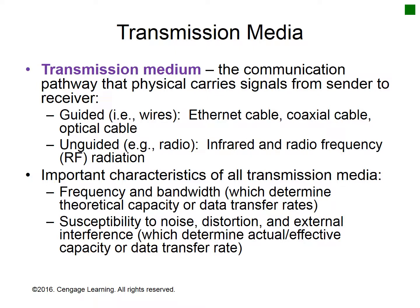Bandwidth is the difference between the highest and lowest frequencies that can be propagated through a transmission medium. Higher bandwidth channels can reliably carry composite signals with more data content over longer distances. The effective data transfer rate can be much lower than the raw data transfer rate because of attenuation, distortion, and noise. Attenuation is loss of signal power as it travels through the transmission medium. Distortion is caused by interactions between the signal and the transmission medium. Noise can be generated internally or added through external interference. The signal-to-noise ratio is a measure of the difference between noise power and signal power.